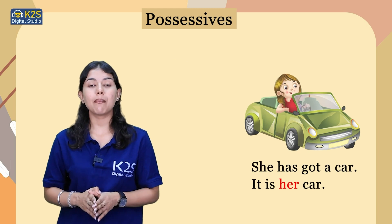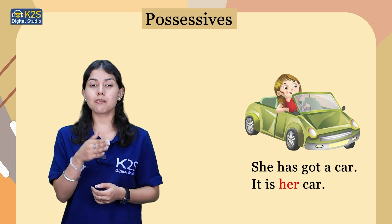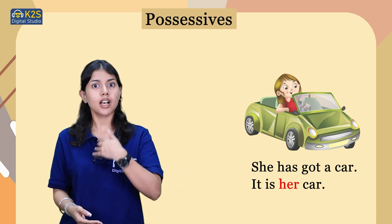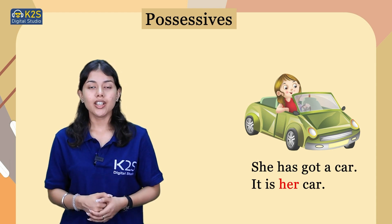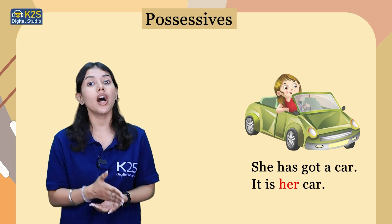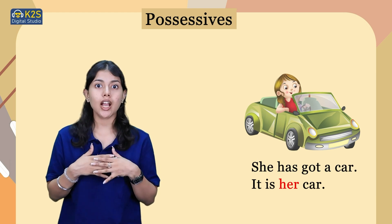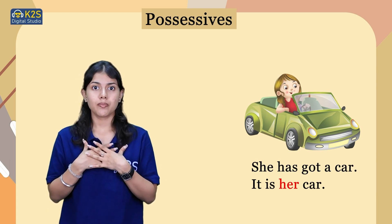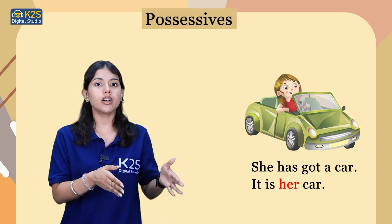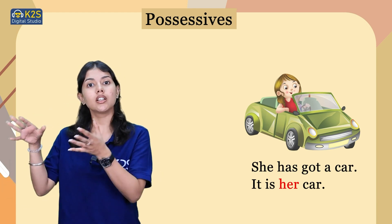In the second example, you can see that there is a girl who is having a car. The sentence is: She has got a car. It is her car. Here the word 'her' shows the ownership of the girl over the car. We are talking in third person, so we use 'her'. That means it is the girl's car.